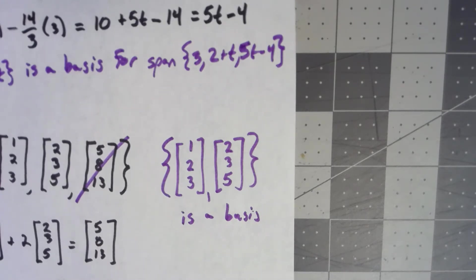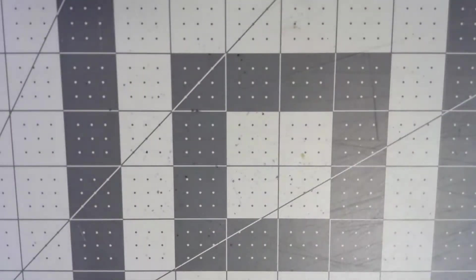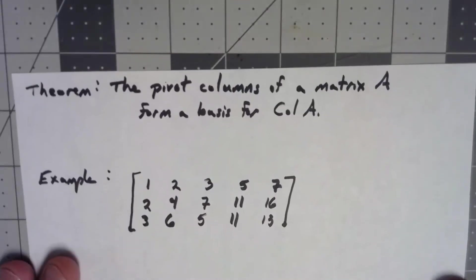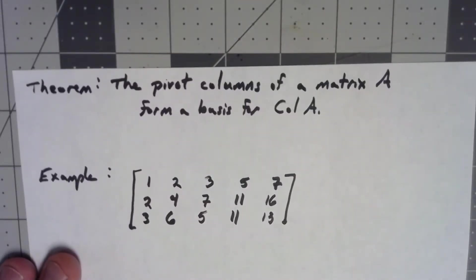If we put this together with other things that we've studied, we can say this: The pivot columns of a matrix A form a basis for the column space of A.